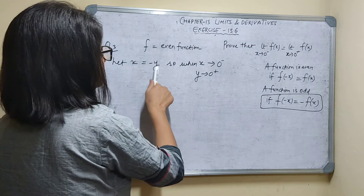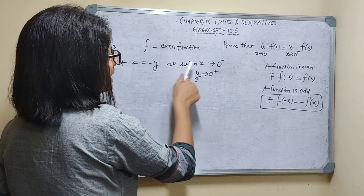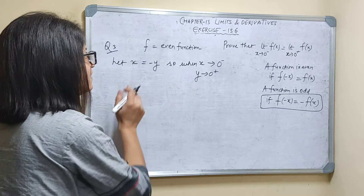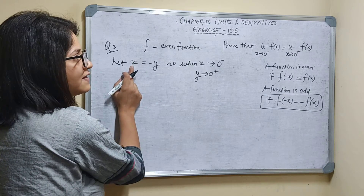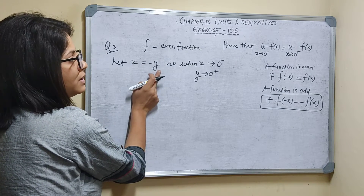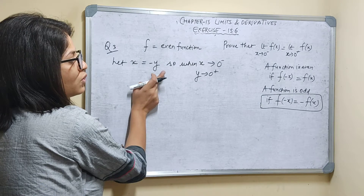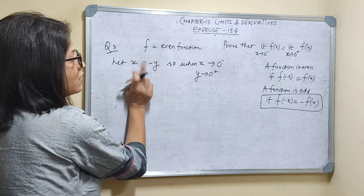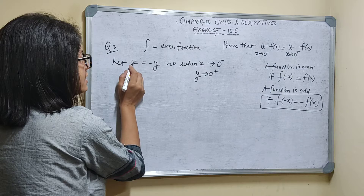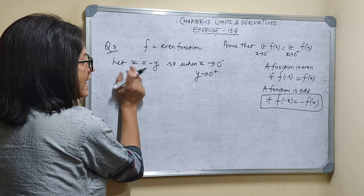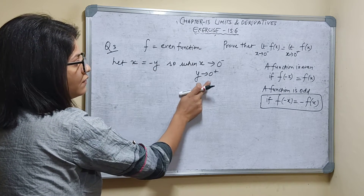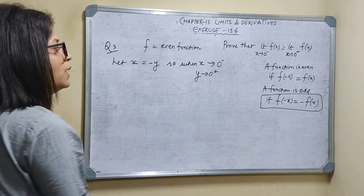Let x = minus y. So when x tends to 0 minus, that means x is less than 0. If x is less than 0, then y should be greater than 0, because x = minus y. So if x tends to 0 minus, then y tends to 0 plus.